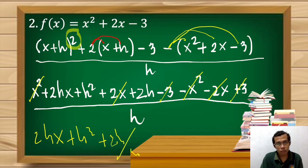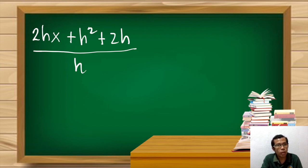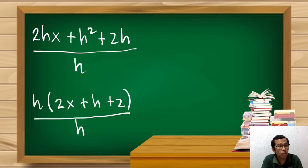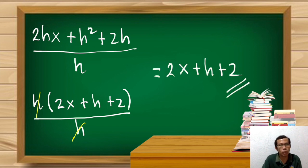We're now left with 2hx + h² + 2h all over h. We can factor out the common term h from the numerator, giving h times the quantity (2x + h + 2), divided by h. We then cancel h from numerator and denominator, and we're simply left with 2x + h + 2. That is our answer for Example 2.